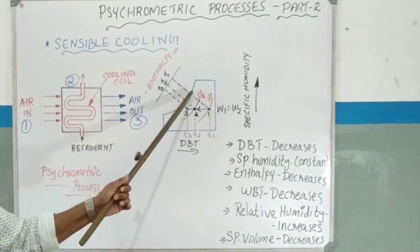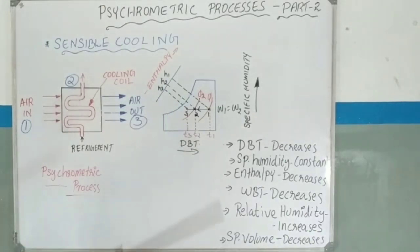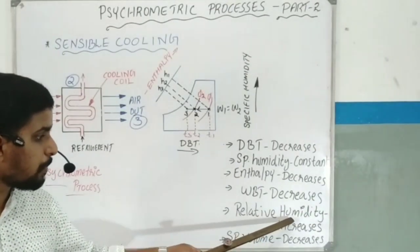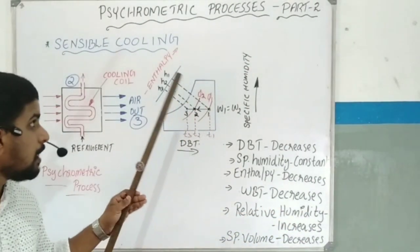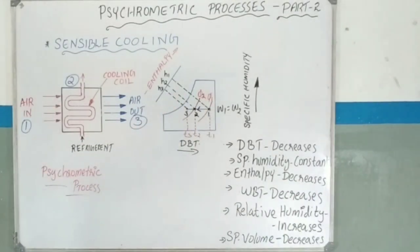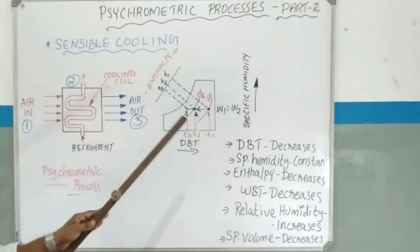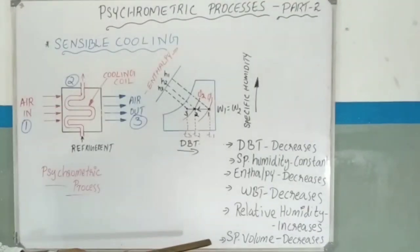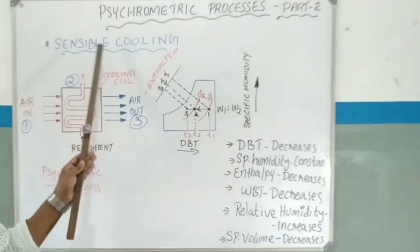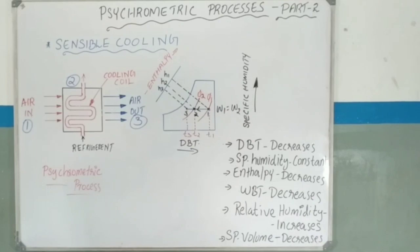During sensible cooling, the relative humidity increases as the dry bulb temperature decreases. The specific humidity remains constant throughout this process.